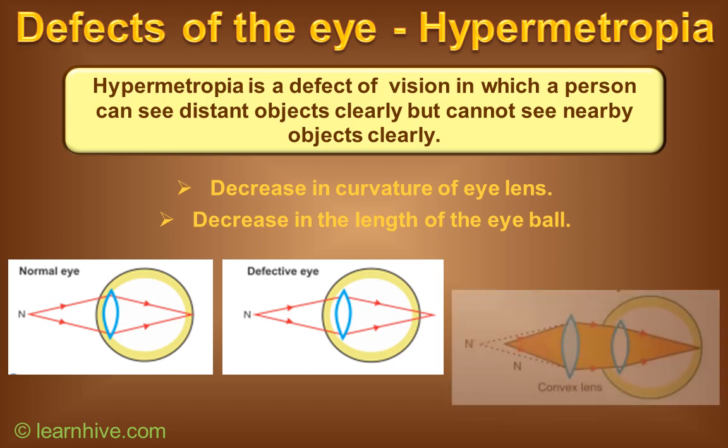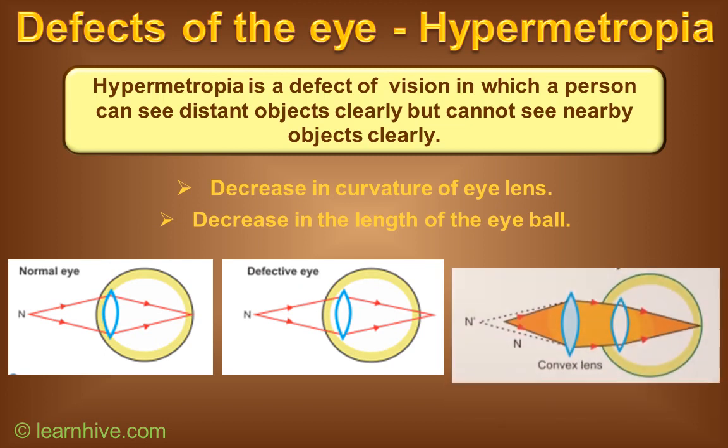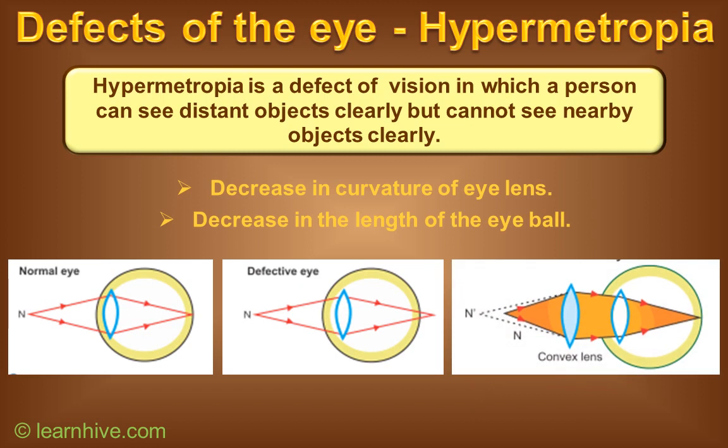Hypermetropia is corrected by using a convex lens. The lens converges the rays from an object at 25 cm such that the rays appear to come from the near point of the defective eye. The eye then forms a sharp image of the object on the retina.